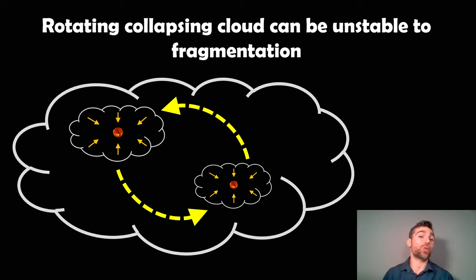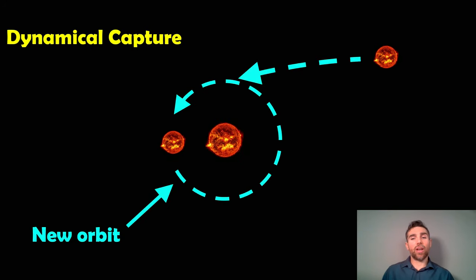The other method, which is probably rarer, is dynamical capture of a star around a single star. Let's say you have two stars formed independently from the collapse of a gas cloud. If those stars get quite close to each other, they can gravitationally capture each other.